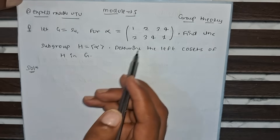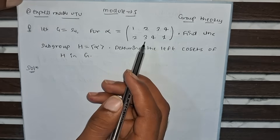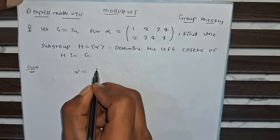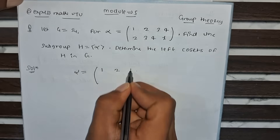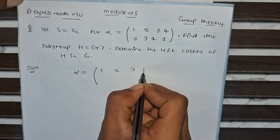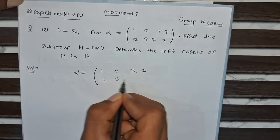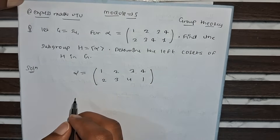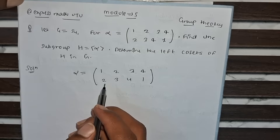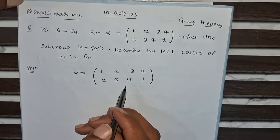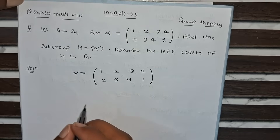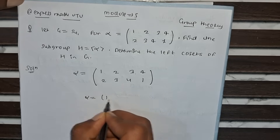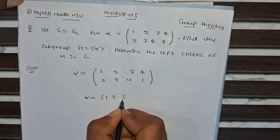So first step: understand the permutation which is given. This is our permutation. Alpha equals (1,2,3,4 / 2,3,4,1). The permutation which is given is a 4-cycle, so alpha equals (1,2,3,4) in cycle notation.